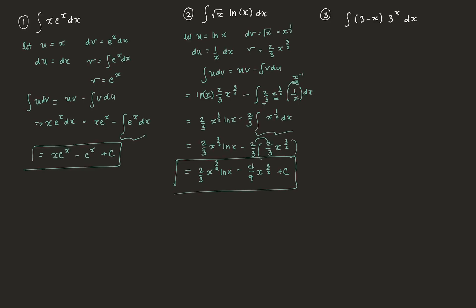Now a slightly more complicated example: the integral of (3 − x)·3ˣ dx. Let u = (3 − x), which is easy to differentiate, so du = −dx. Let dv = 3ˣ dx, and by rules of integration, v = 3ˣ / ln(3).